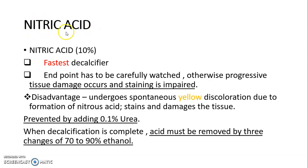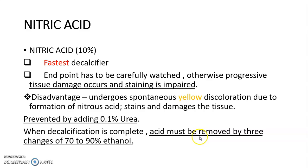10% nitric acid is the fastest decalcifying agent. However, the endpoint has to be carefully watched; otherwise, progressive tissue damage occurs and staining is impaired. A further disadvantage is that nitric acid undergoes spontaneous yellow discoloration due to the formation of nitrous acid, which stains and damages the tissue. This can be prevented by adding 0.1% urea. When decalcification is complete, the acid must be removed by 3 changes of 70–90% ethanol.